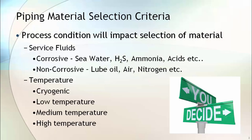There are many process conditions that will impact the selection of piping material. The first process condition is the type of service of the fluid. This fluid can be corrosive or non-corrosive. For corrosive fluid, you have to go for high corrosion resistance material compared to non-corrosive services. Seawater, H2S, ammonia, and acids come under corrosive services, whereas lube oil, air, and nitrogen are non-corrosive services.